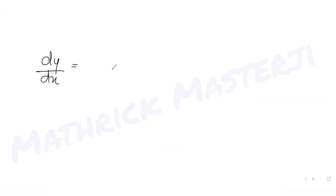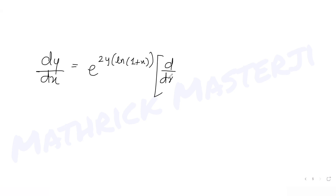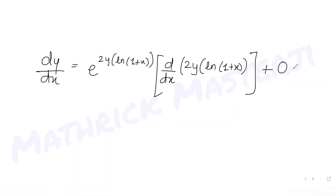Now I differentiate this with respect to x to get dy/dx. The derivative of e^(2y·ln(1+x)) uses the chain rule: it becomes e^(2y·ln(1+x)) times the derivative of the exponent 2y·ln(1+x). The derivative of 1 is 0 and the derivative of -x² is -2x.